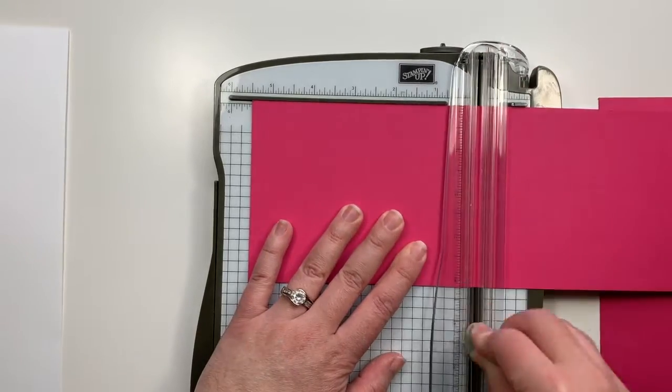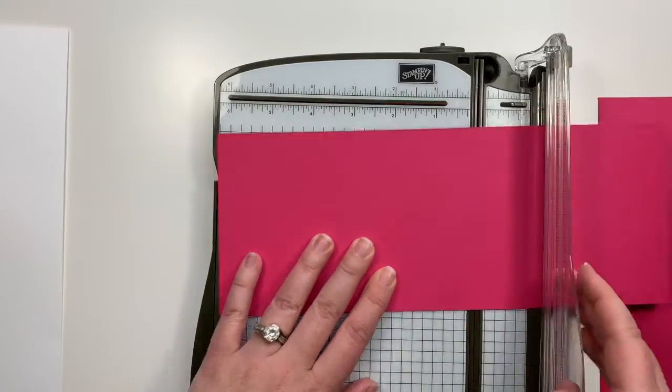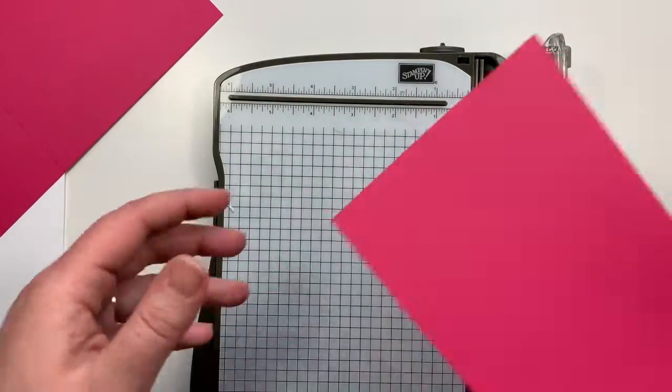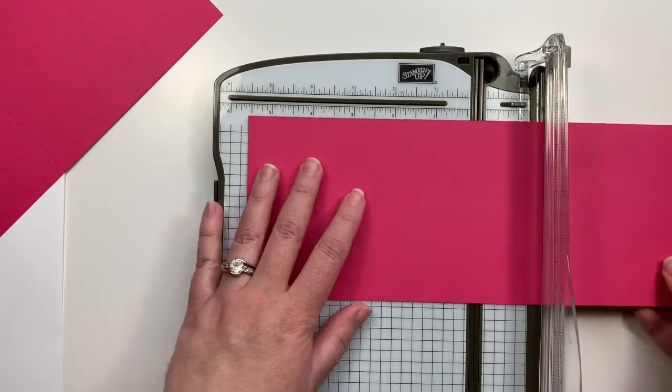Once you've cut that in half we're going to rotate those pieces and score them at 5½. On the Stampin' Trimmer there is a scoring tool provided, but if you don't have a Stampin' Trimmer that has an included scoring tool I'm going to show you an alternate way.